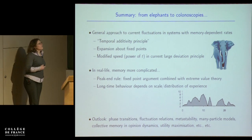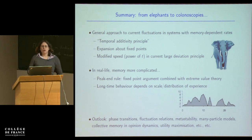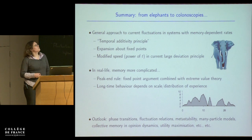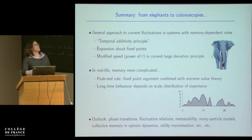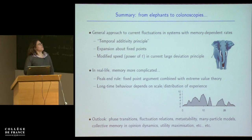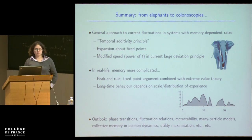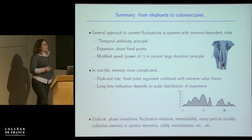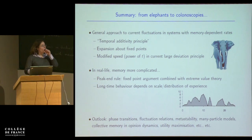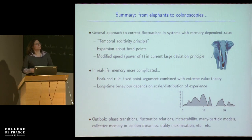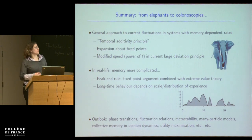In the first part of the talk, I gave a general approach to understand current fluctuations in systems with memory-dependent rates. I talked about the temporal additivity principle and an approximate expansion about fixed points that enables you to use it. In particular, we saw that with this kind of memory you can get a modified speed and modified power of T in the current large deviation principle. In the second part, I talked about the peak-end rule and used a fixed-point argument — similar to the first part but combined with known results from extreme value theory — to predict how long-time behaviour depends on the distribution of experiences in the past.